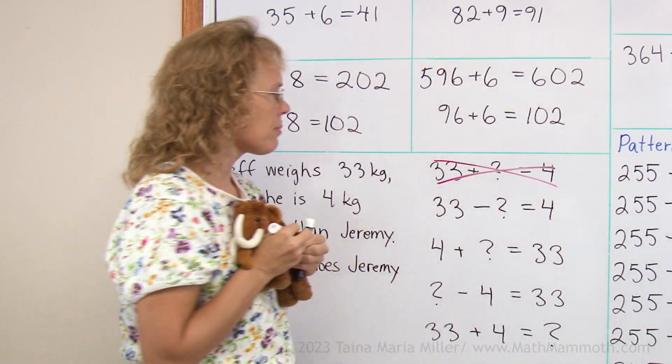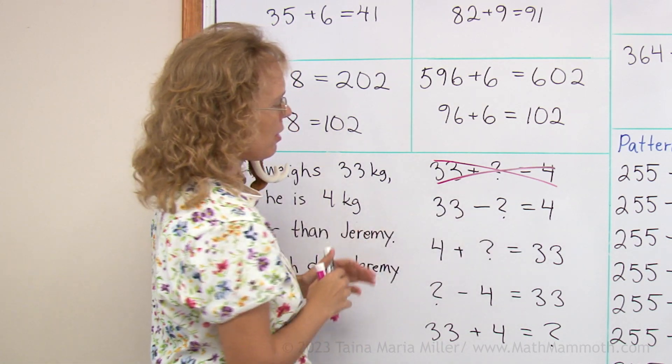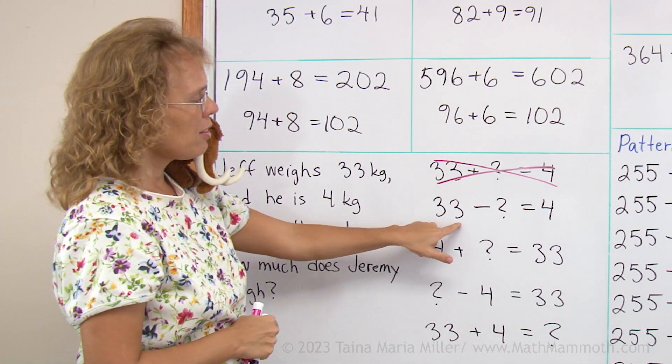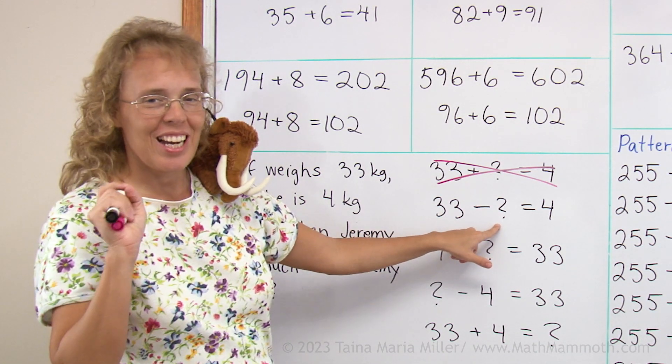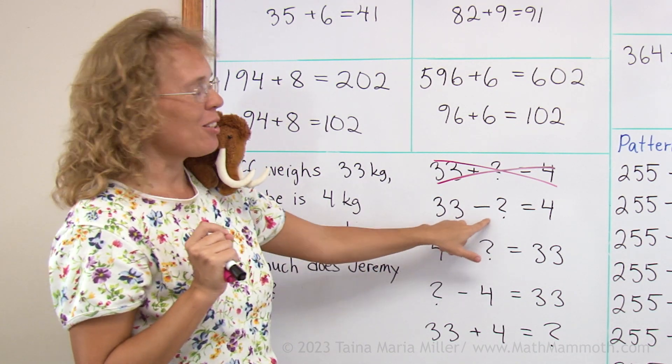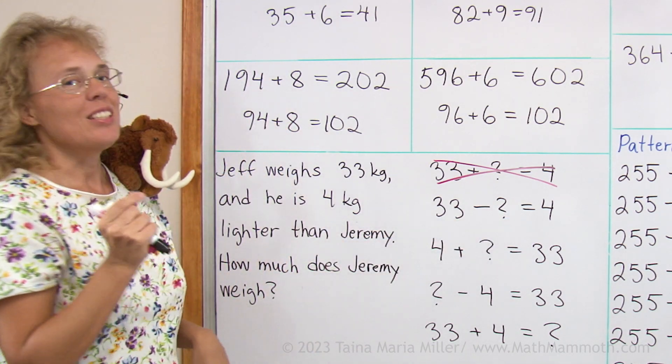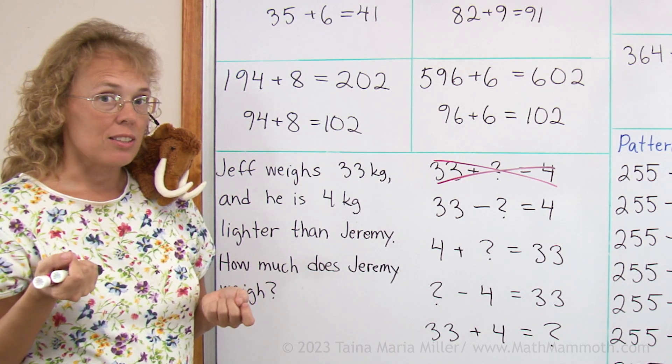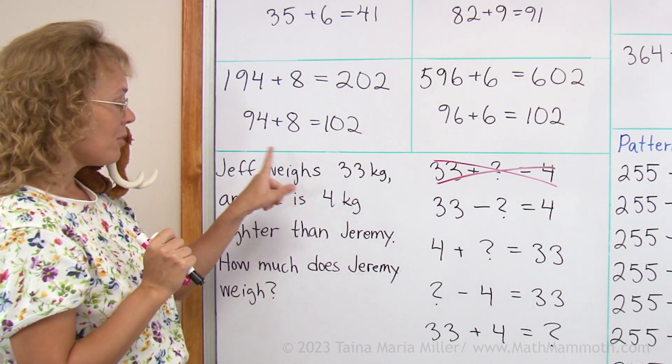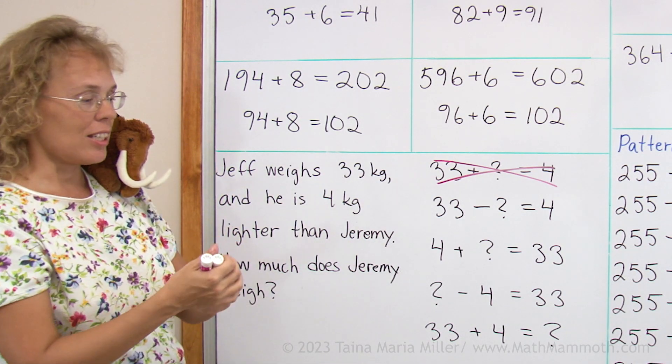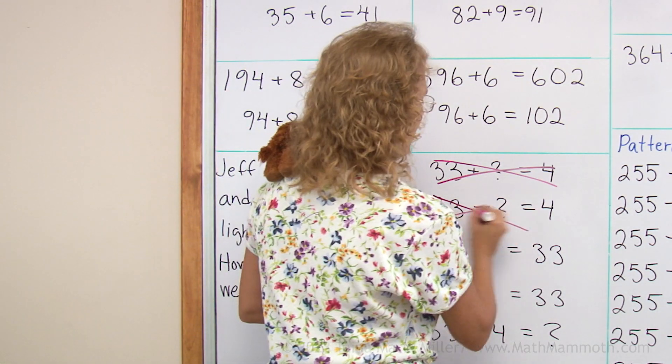How about the next one? 33 minus something equals 4. Okay, 33 minus what number would leave us 4? This is mental math now. 29 would go here, right? 33 minus 29 equals 4. But 29 cannot be the right answer, because Jeremy weighs more than Jeff, more than 33. So 29 cannot be his weight. Cross that out too.